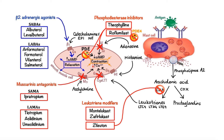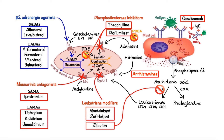Before we move on, a couple more pharmacotherapeutic options are available specifically for patients with allergic asthma. The first is omalizumab, which targets the root cause of the allergic response. Omalizumab is a recombinant monoclonal antibody that selectively binds to free IgE, thus preventing them from binding to the mast cell receptors. As a result, omalizumab inhibits IgE-dependent cellular events such as mast cell degranulation, thereby preventing the release of chemical mediators that cause clinical symptoms such as bronchial constriction. The second option is antihistamines, which work by inhibiting the function of H1 receptors, thereby reducing histamine-mediated responses.